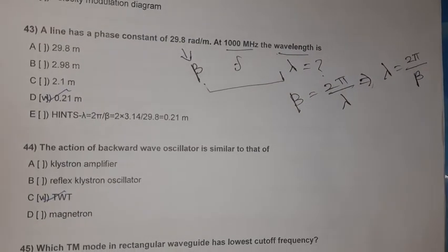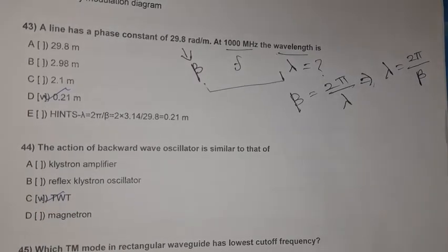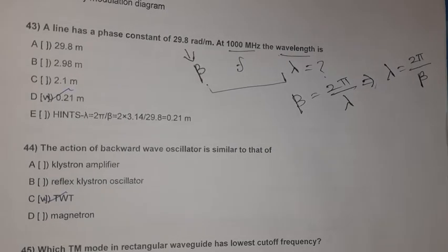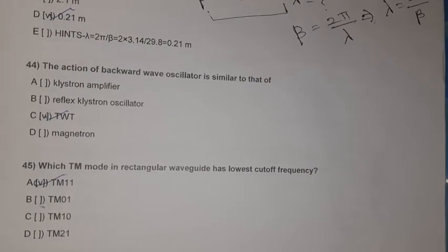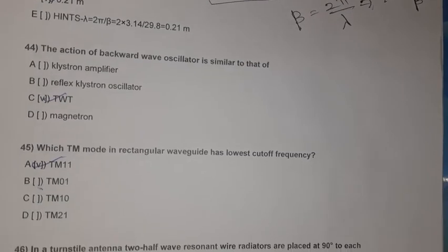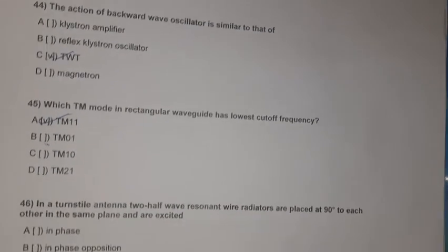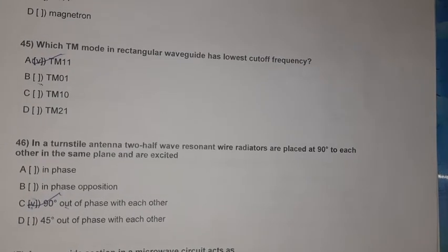Question 44: The action of a backward wave oscillator is similar to that of a TWT. Question 45: In a rectangular waveguide, the TM mode with the lowest cutoff frequency is TM11.